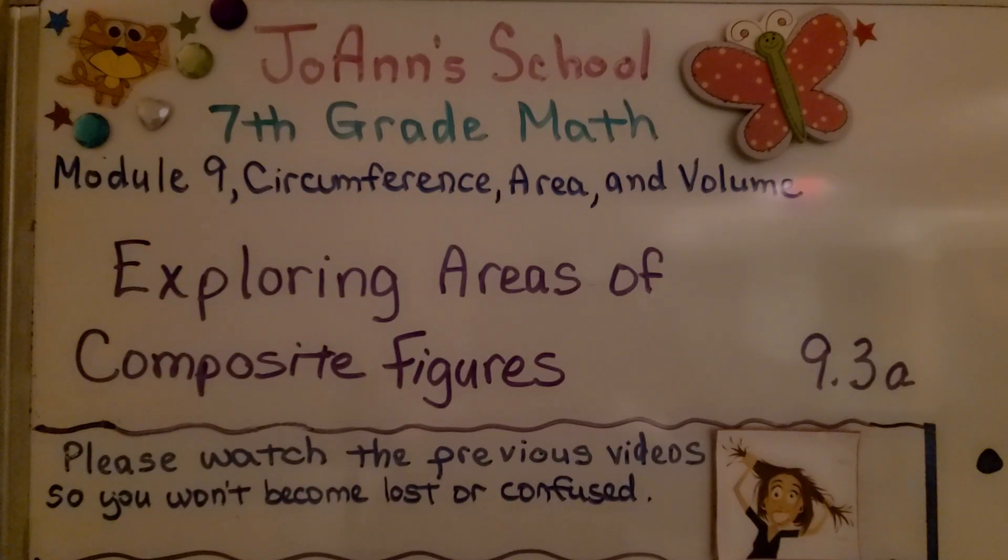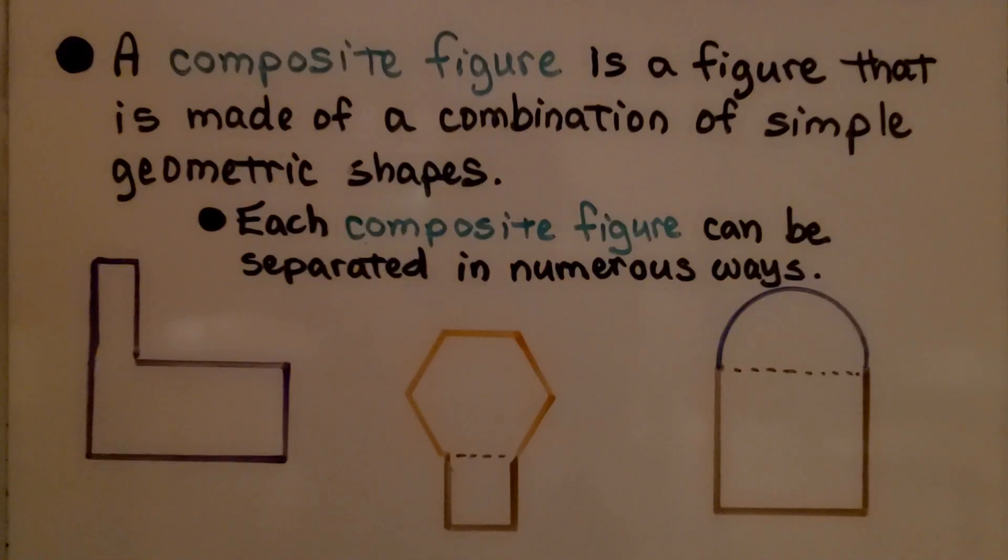Lesson 9.3a, Exploring Areas of Composite Figures. A composite figure is a figure that is made of a combination of simple geometric shapes, like squares, rectangles, circles.